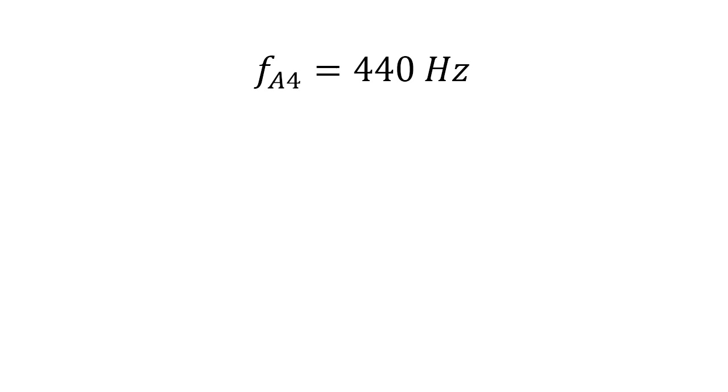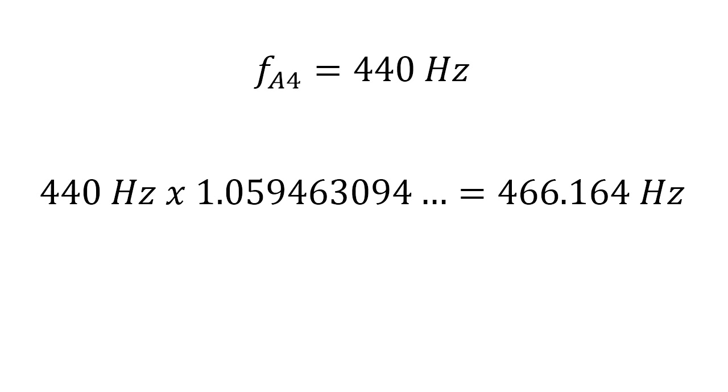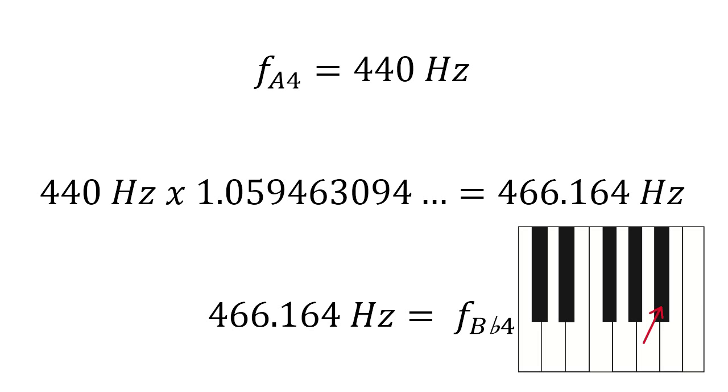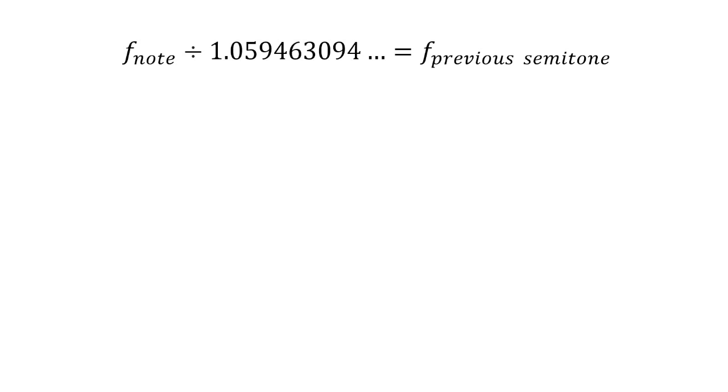For example, if you multiply the frequency of A4, which is 440 Hz, by this number, you will get 466.164 Hz, which is the frequency of Bb4. And for the previous semitone, you divide.